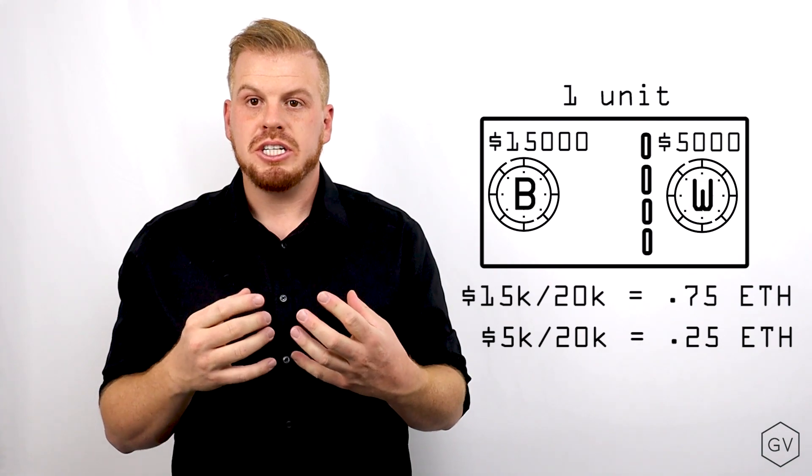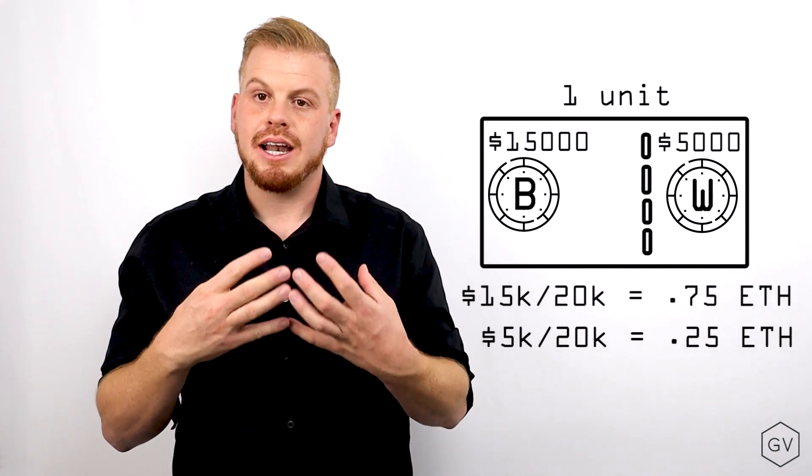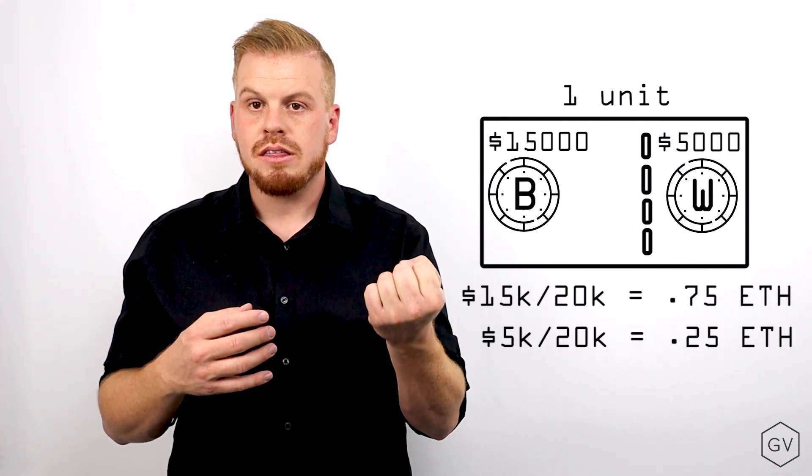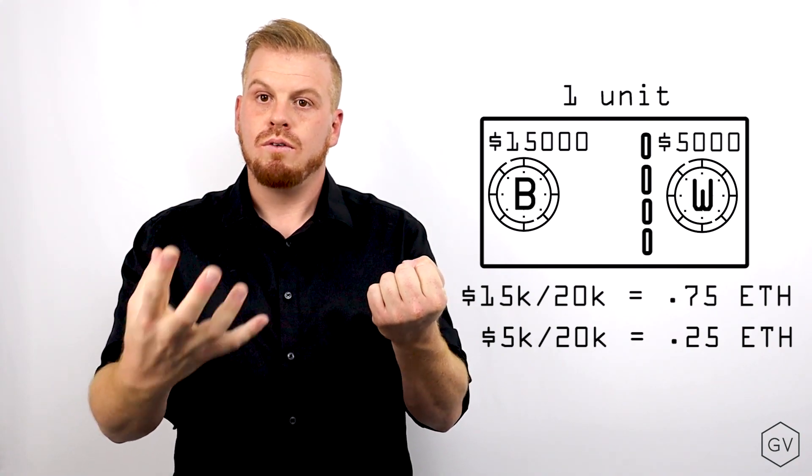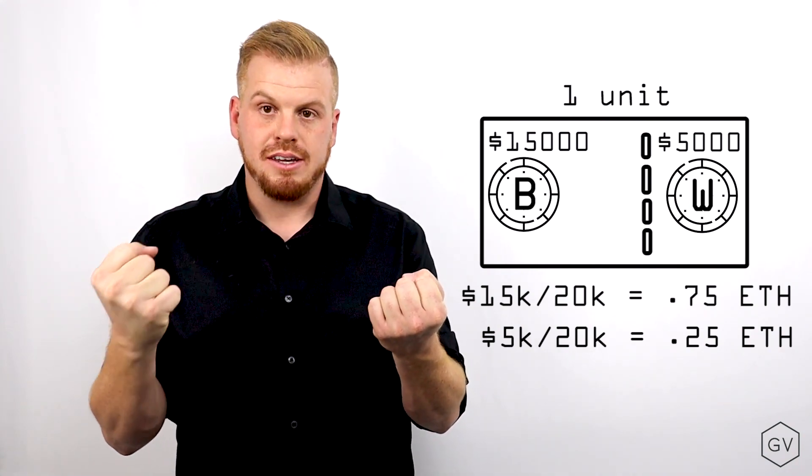Together, the B token and the W token equal one unit of ETH, but at expiration, the B token has the right to claim 0.75 ETH and the W token has the right to retrieve 0.25 ETH. Together, that is how the Siren protocol uses the settlement layer and the settlement bot to emit an option and create a cash settlement procedure at expiration.